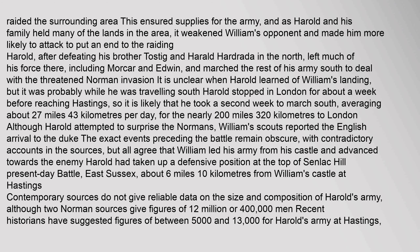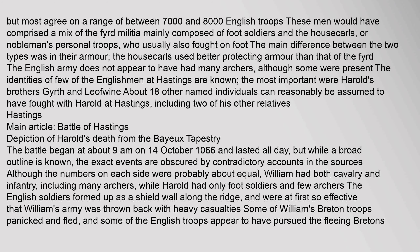Contemporary sources do not give reliable data on the size and composition of Harold's army, but most agree on a range of between 7,000 and 8,000 English troops. These men would have comprised a mix of the fyrd militia mainly composed of foot soldiers and the housecarls, or noblemen's personal troops, who usually also fought on foot. The main difference between the two types was in their armor; the housecarls used better protecting armor than that of the fyrd. The English army does not appear to have had many archers. The most important individuals known at Hastings were Harold's brothers Girth and Leofwine.